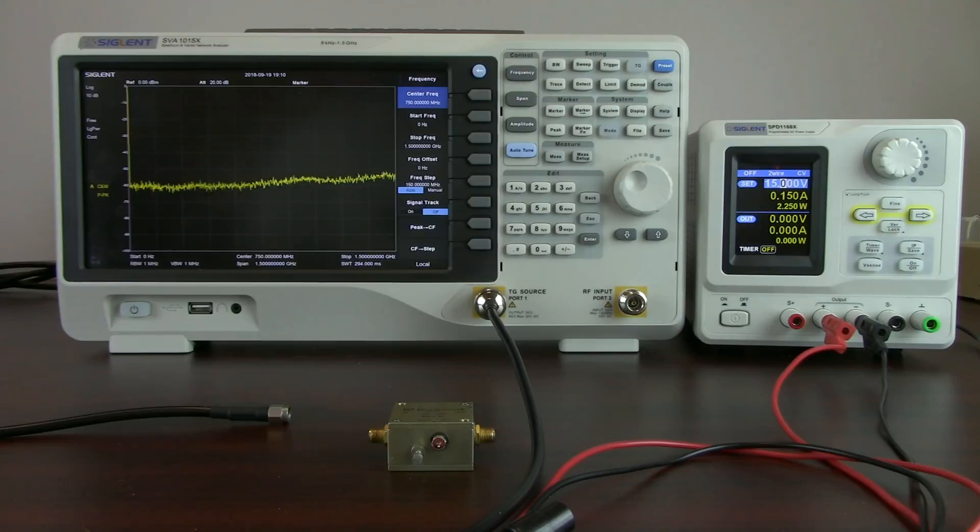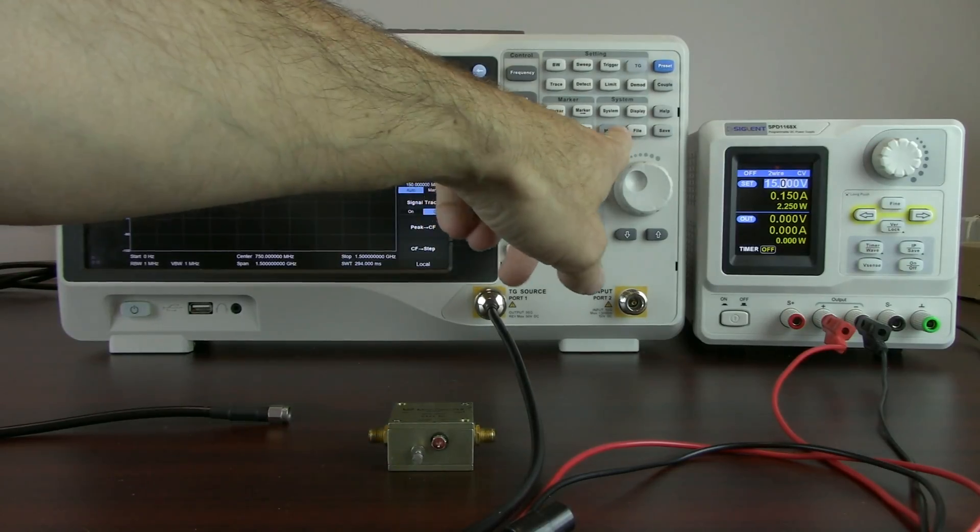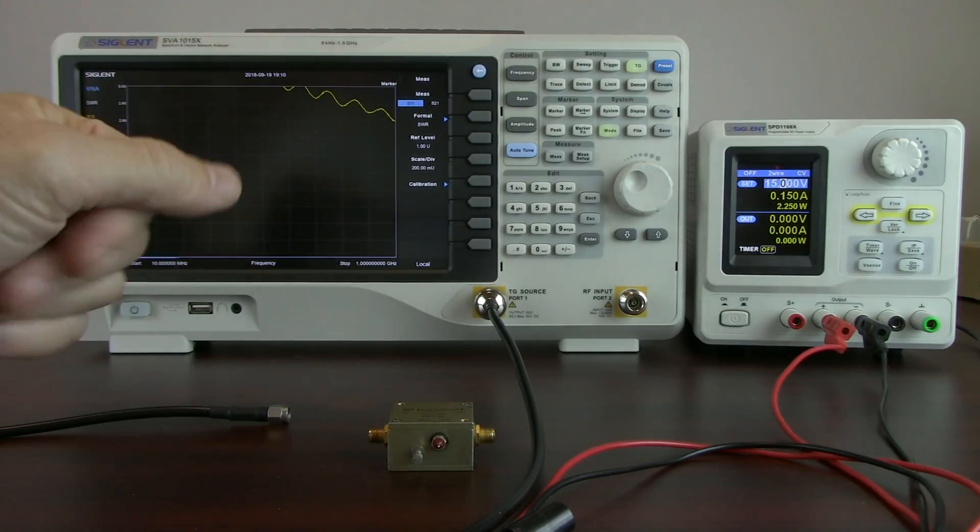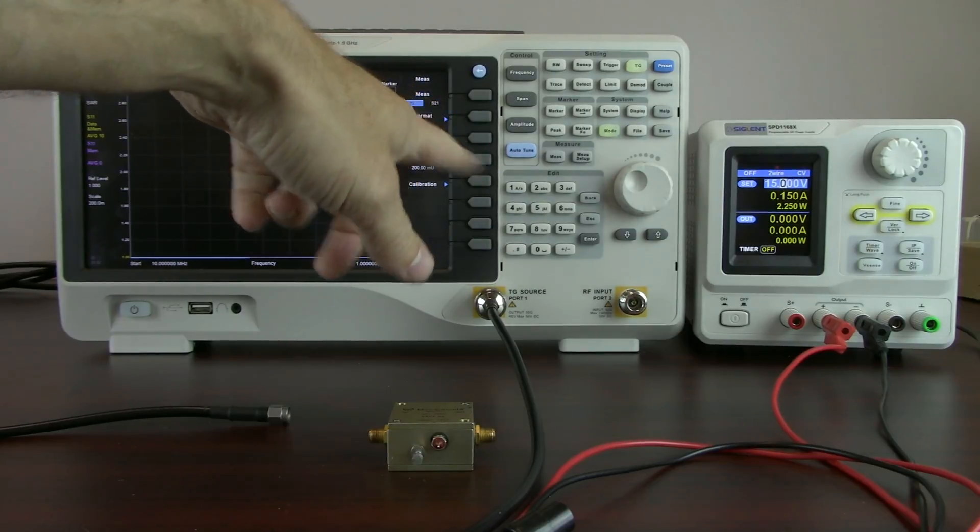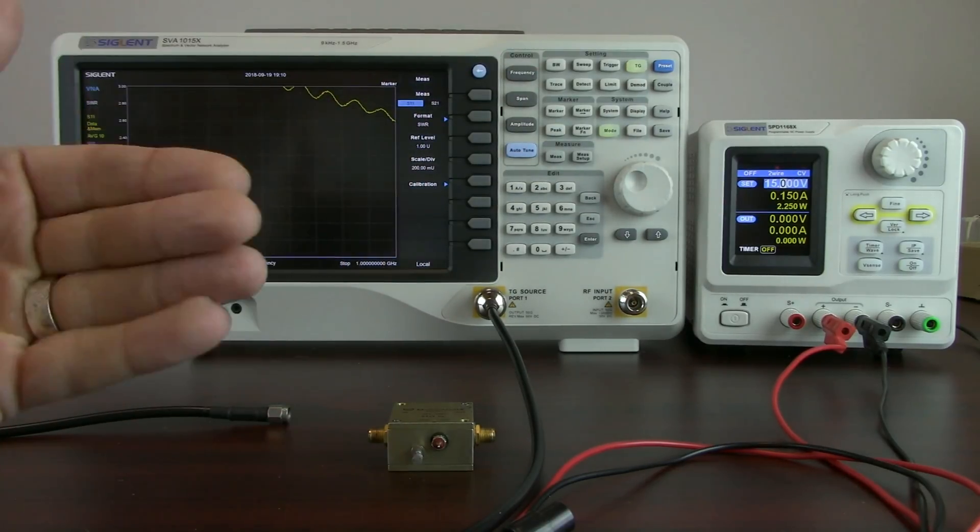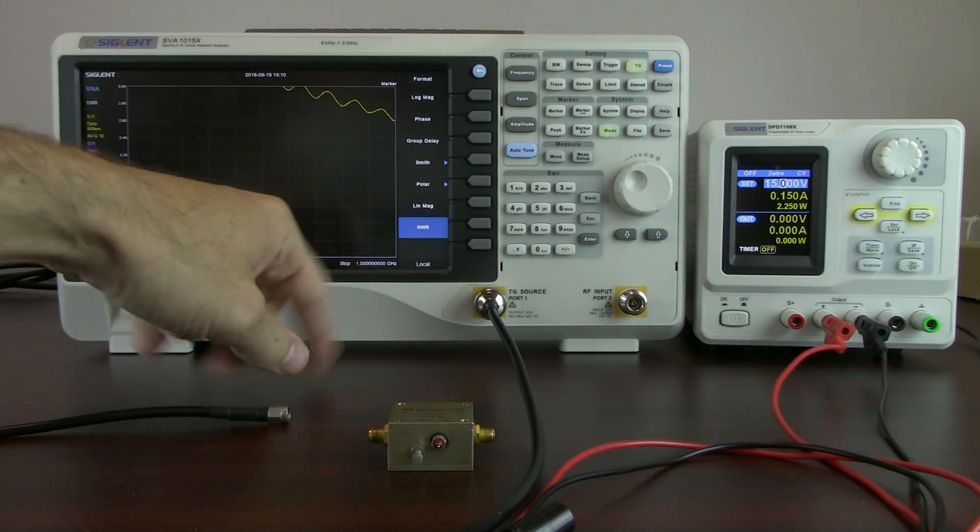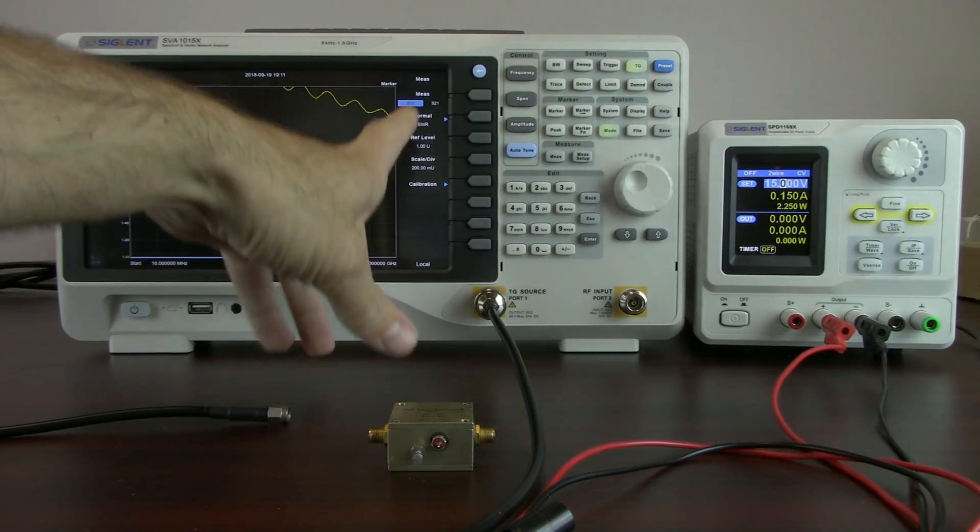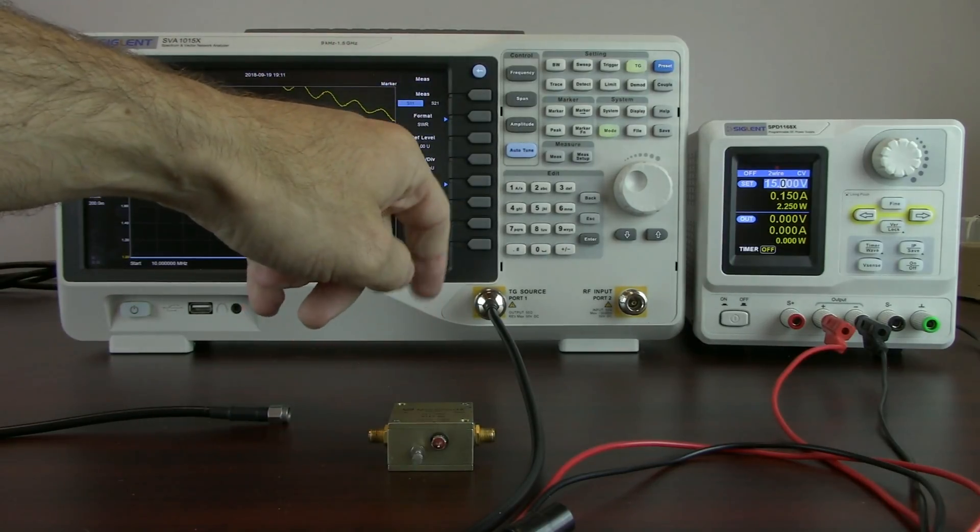So the first thing we're going to do is configure the SVA for VNA and we're just going to press the mode button and hit Vector Network Analysis. That's going to put the instrument into VNA mode or Vector Network Analyzer mode. And now we've got the ability to select S11 or S21. In this case since we're going to be looking at the VSWR we're going to look at S11 and the format we've got a number of different formats available. We're going to select SWR and we've already set our scale and things previously. So you can adjust the reference level as well as the scale per division.